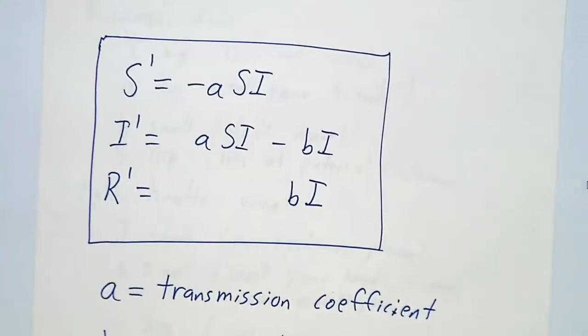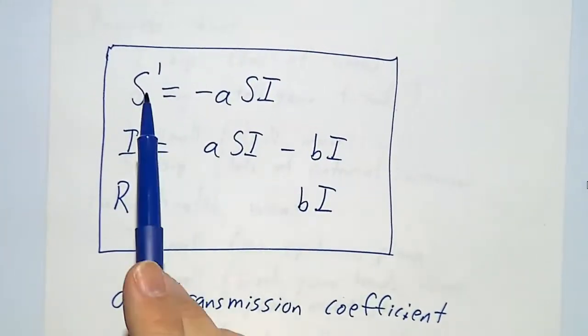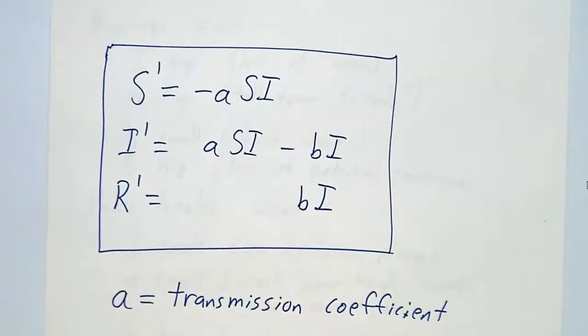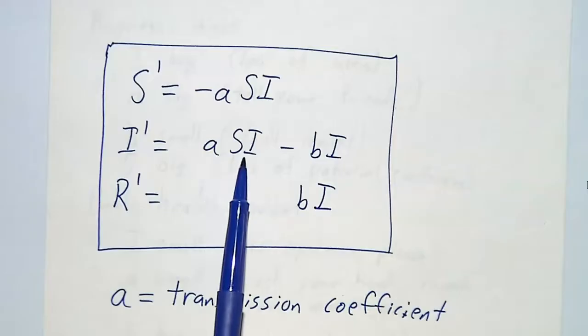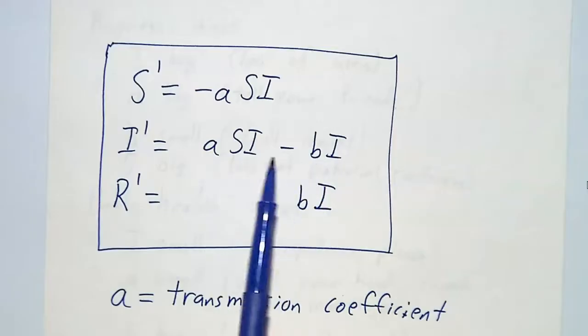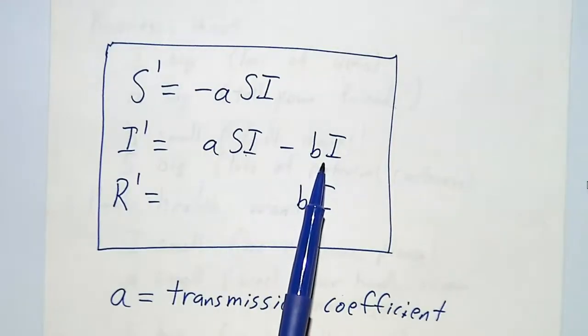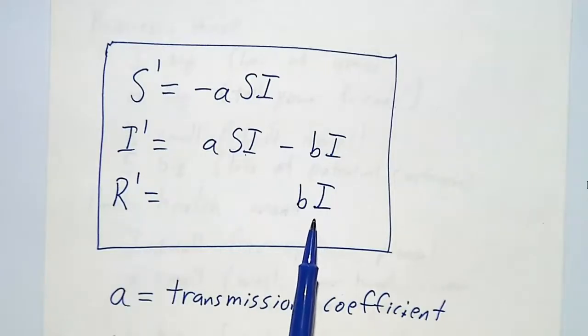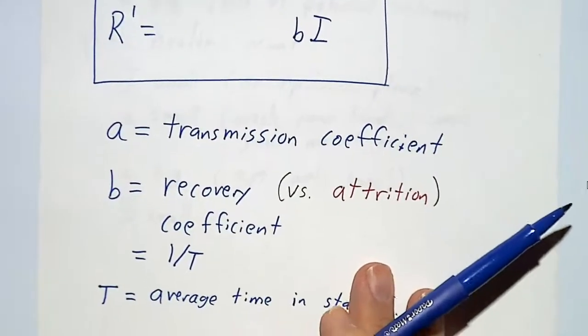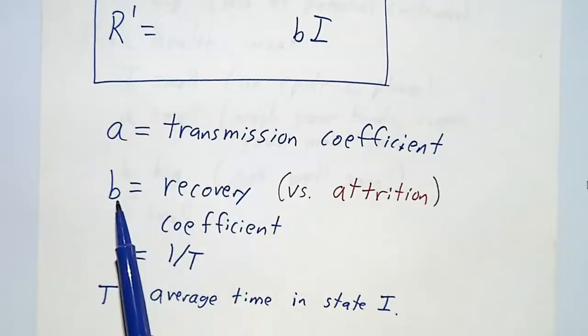And we wind up with the exact same equations as we had before. S decreases at a rate of ASI. I increases at a rate ASI minus - that's the people who get sick - minus the number of people who recover. And R increases at the rate at which people recover. We have slightly different names. A is still the transmission coefficient, but B, instead of being an attrition coefficient, is a recovery coefficient. And as before, it's one over the average amount of time that you spend in state I. Here, state I means you're infected. Before, state I meant that you were a user of the product.